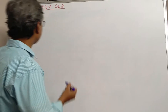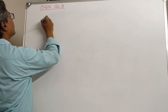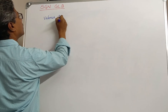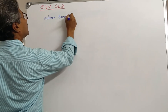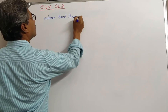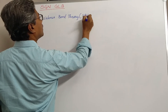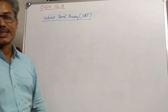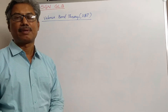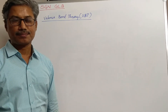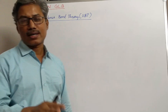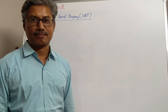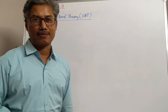The theory is known as Valence Bond Theory, abbreviated as VBT. As Werner's theory was depending on some principles, even this theory also depends on some principles. Let's go through them one by one.